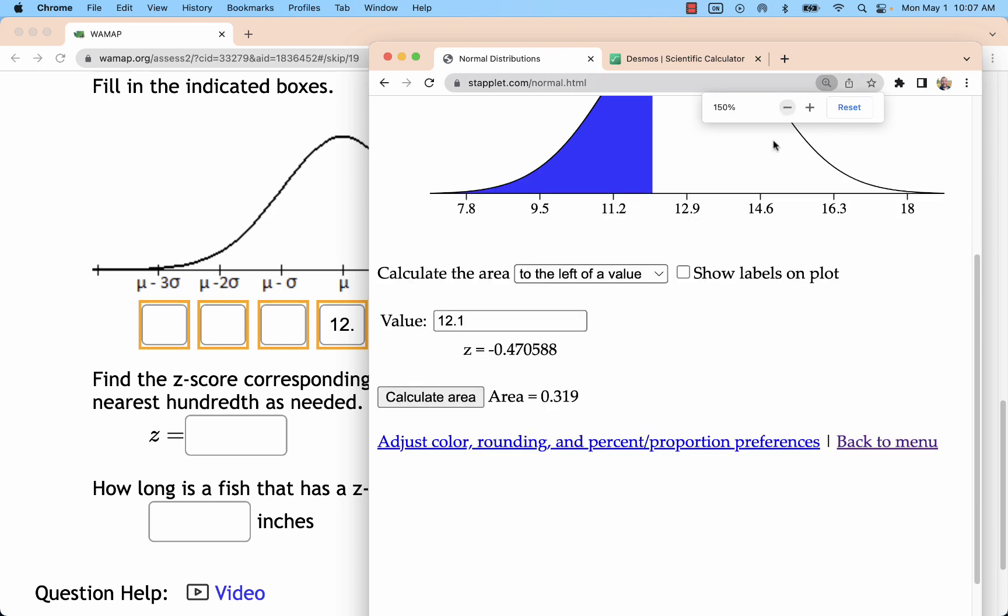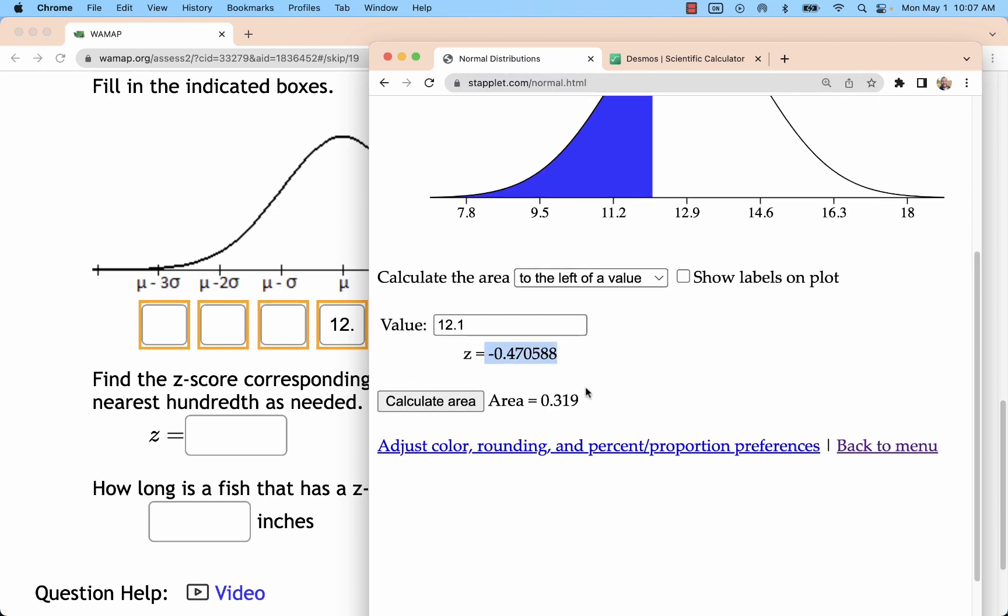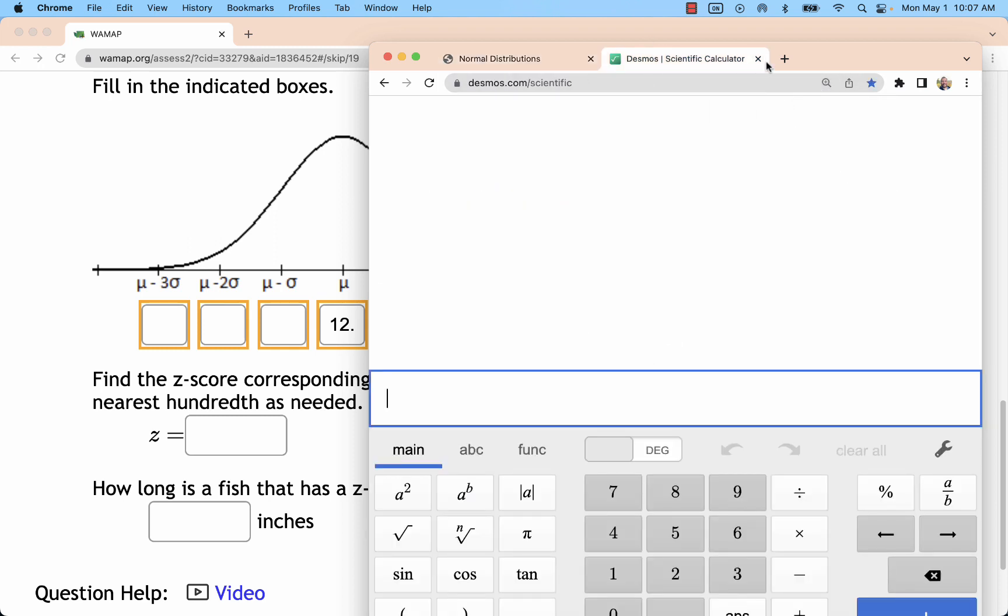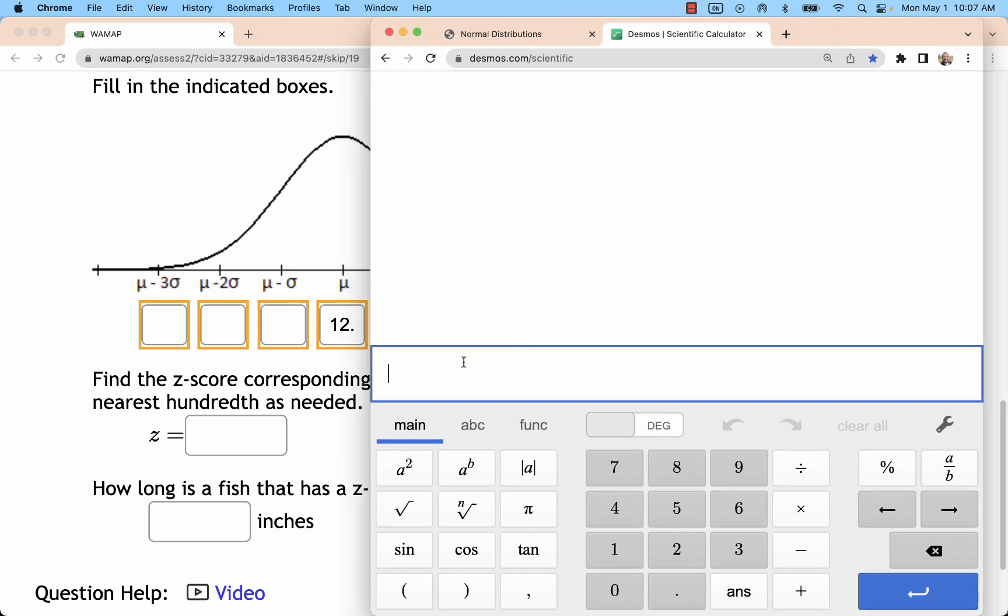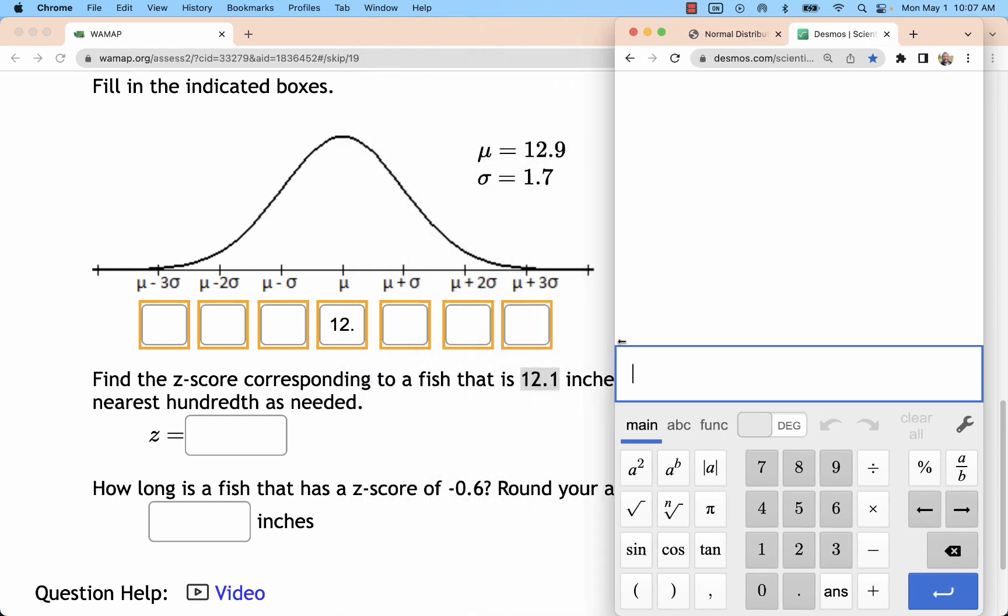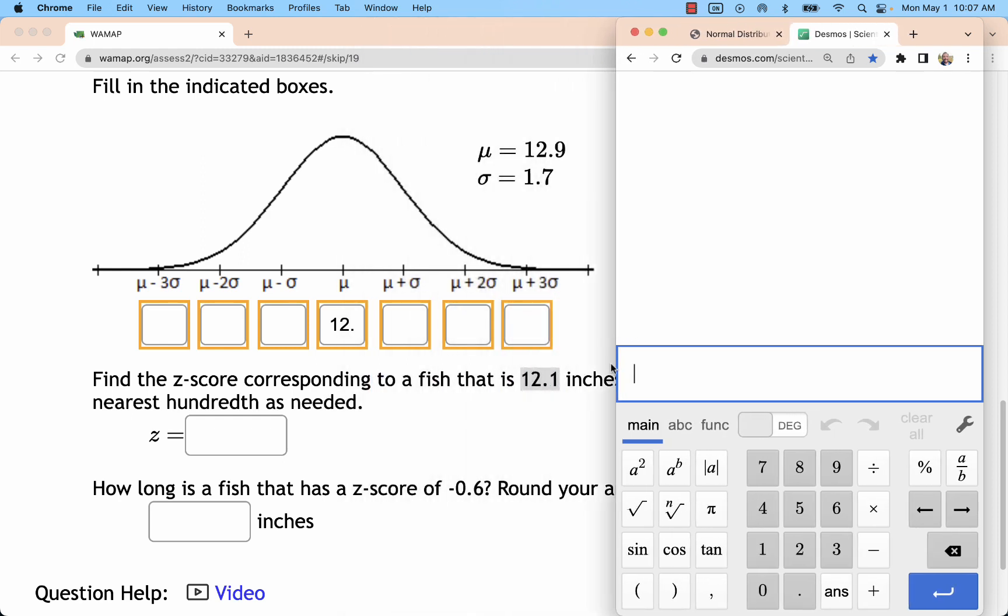Calculating that area, it does spit out a z-score for me. The other way you'll want to do it is using Desmos. Z is going to be the distance from x to the mean divided by the standard deviation. So on this problem, the difference is, and I will want to use parentheses, 12.1 - always x minus the mean - 12.9.